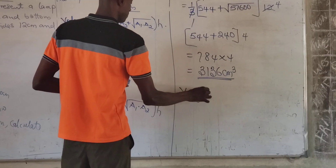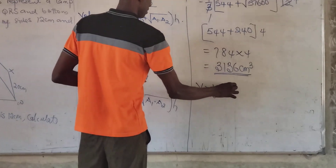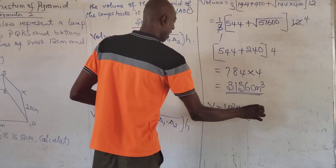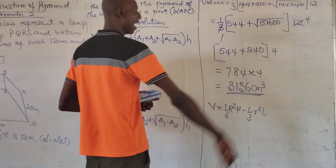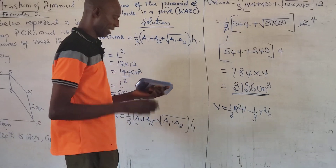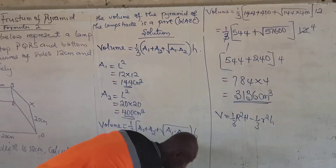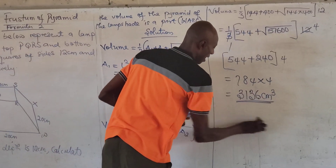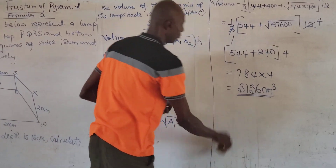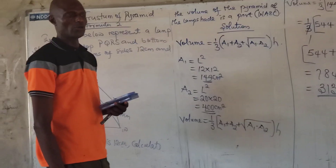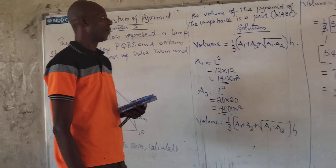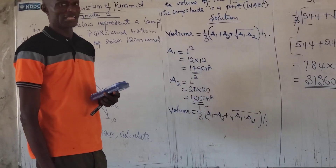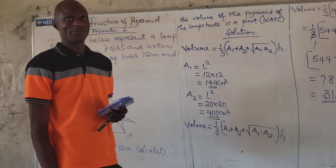So when you use V equals 1 over 3, big radius squared times big height, minus 1 over 3, small radius squared times small height, you will get the same answer. I encourage you again to subscribe to my YouTube channel at Otemu Mass Sources. Thank you.